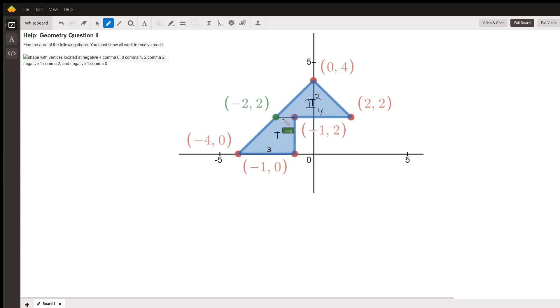This base right here goes from -2 to -1, so its length is 1. And the height of the trapezoid is along this vertical segment right here, which goes from 0 up to 2, so 2.